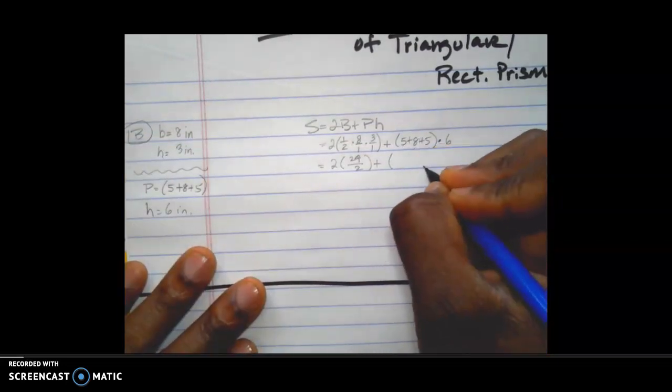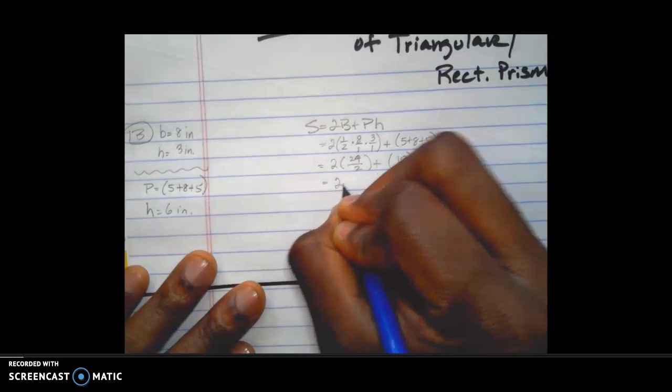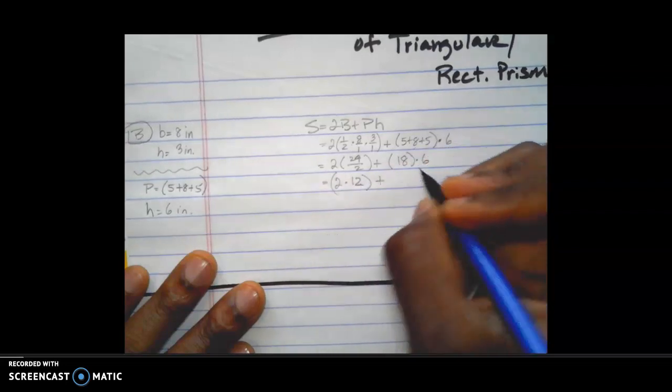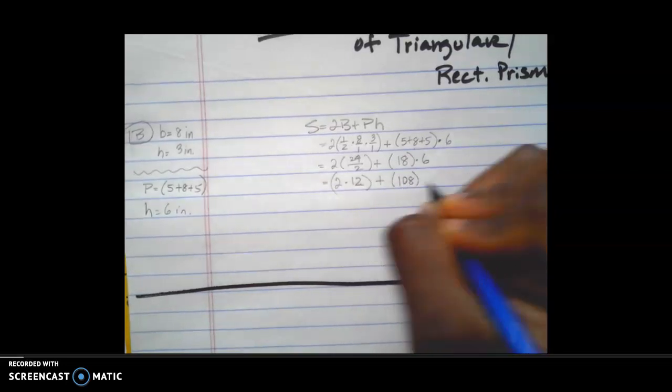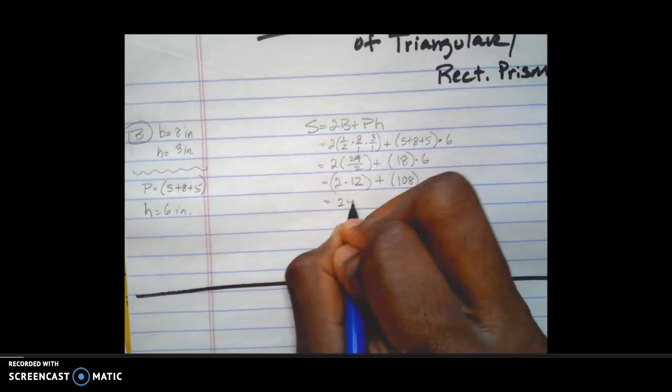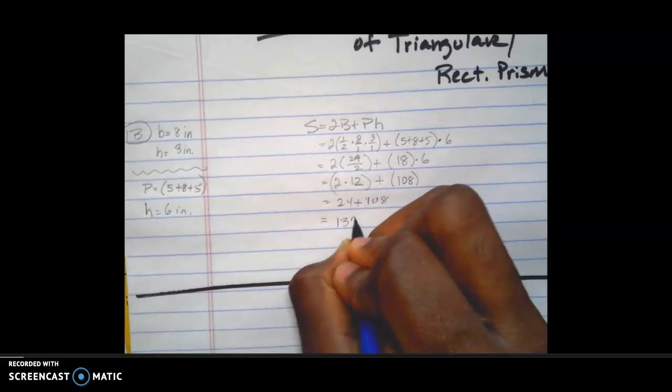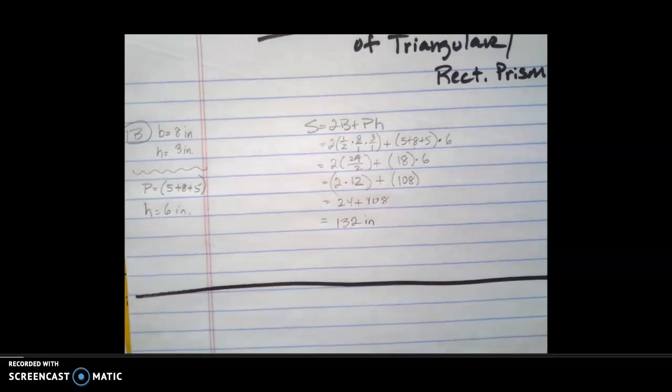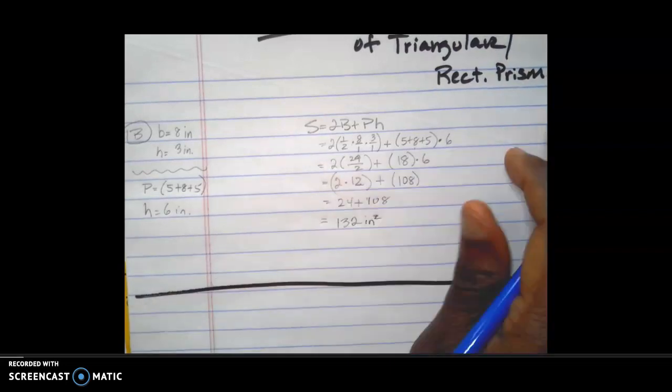Let's start simplifying. 5 plus 8 is 13, 13 plus 5 is 18. Multiplying that by 6. When I simplify this out, this becomes 12, 24 over 2 is 12. 18 times 6 is going to give me 108. So 12 plus 108 is going to give me 120 plus 12, which is 132. The surface area is 132 inches squared.